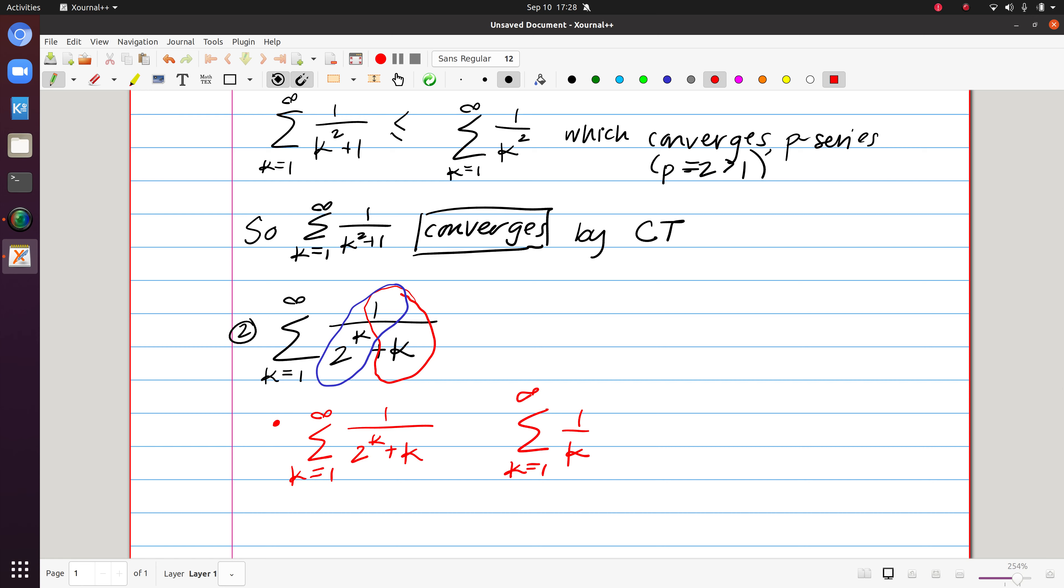Again, what I want to focus on here is that these denominators are different. In particular, the denominator of what we have on the left is larger than that on the right. And consequently, the entire sum is smaller.